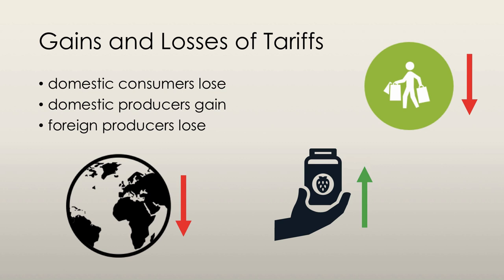Domestic producers gain because they are able to sell more of their product at a higher price. Foreign producers lose because they are unable to sell as much of their good as before.